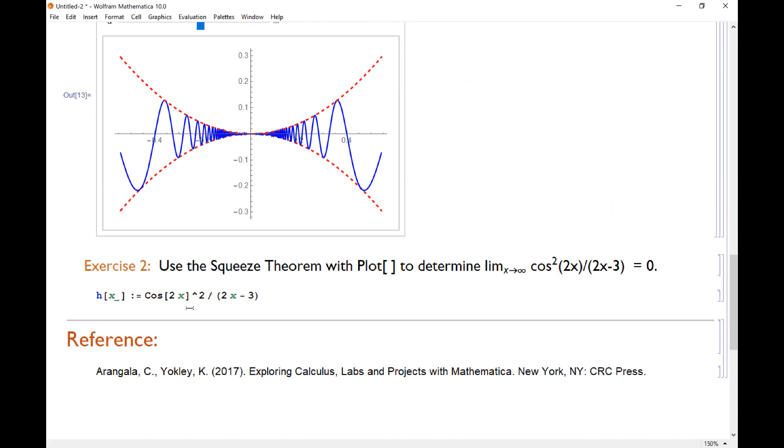So let's use the squeeze theorem for exercise 3. We want to use squeeze theorem with plot to figure out what's going on as x goes to infinity of cos²(2x)/(2x-3). And we're saying that it goes to 0, but we need to show that. First, I have my function h, which is cos(2x) quantity squared. I've seen a lot of students do this when they're writing in Mathematica cos²(2x). And I understand that because that's how we write it down usually. But the computer doesn't understand what that means because it's a cosine function, and then we're squaring the cosine function. And we have that over 2x-3.